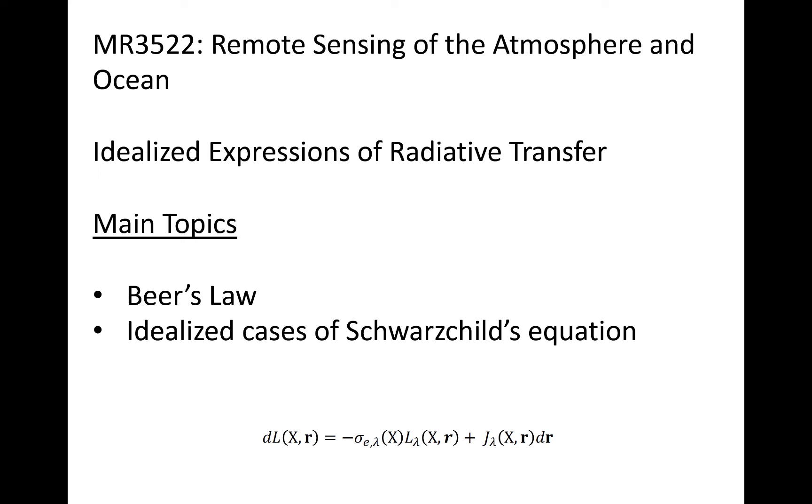In this lecture, we will describe a few idealized cases of Schwarzschild's equation, including the case described by Beer's Law. Recall the general form of Schwarzschild's equation shown here at the bottom. We will use this as a starting point for discussion.